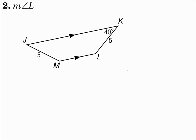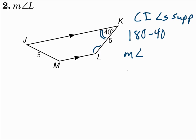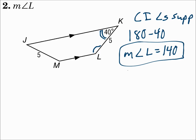Number two: find the measure of angle L. This is another trapezoid because one pair of opposite sides is parallel. The 40-degree angle and angle L are a pair of consecutive interior angles, which are supplementary — they add up to 180. So 180 minus 40 is 140, and the measure of angle L is 140. Watch for consecutive interior angles; they are supplementary.